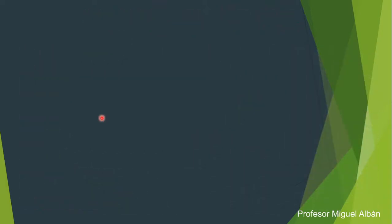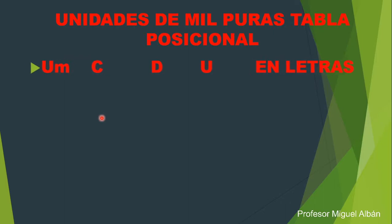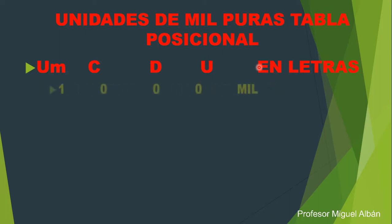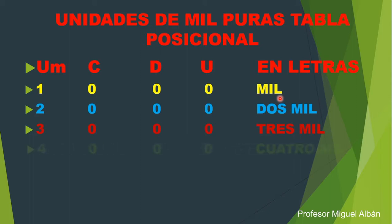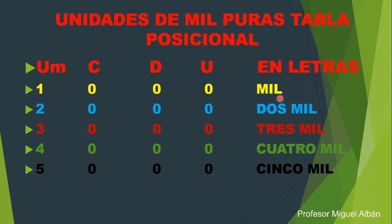Avancemos con el número 3: unidades de mil puras. La tabla posicional se representa por las letras U, D, C y la unidad de mil. Recuerde que son unidades de mil puras, con ceros en centenas, decenas y unidades. La primera unidad pura es mil (1.000); la segunda, dos mil (2.000); la tercera, tres mil (3.000); la cuarta, cuatro mil (4.000); y la quinta, cinco mil (5.000).